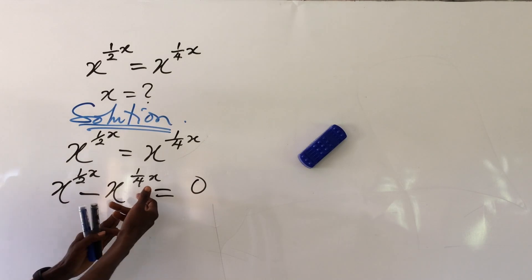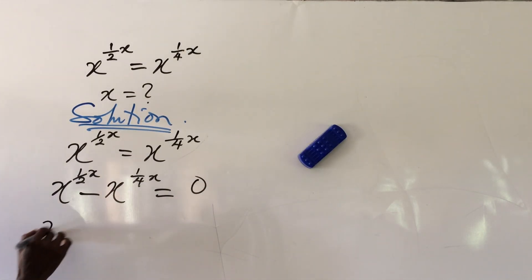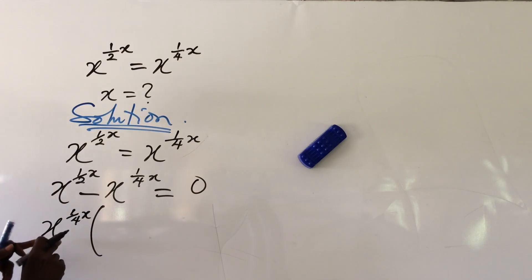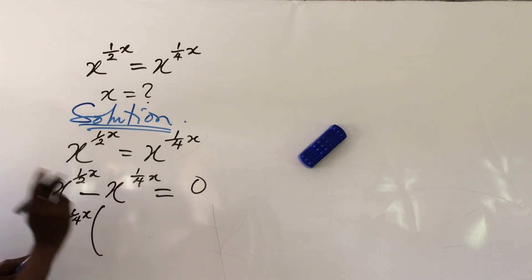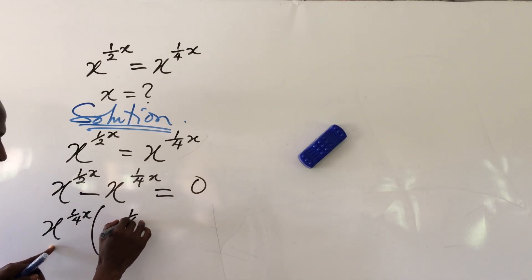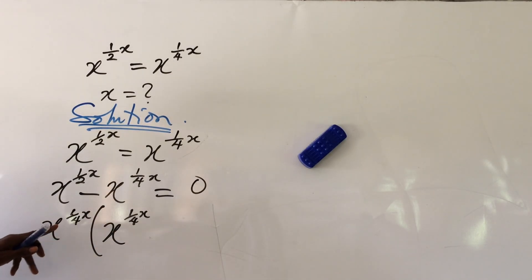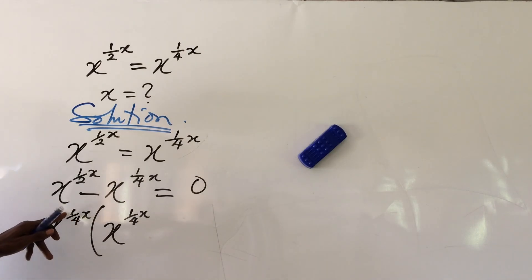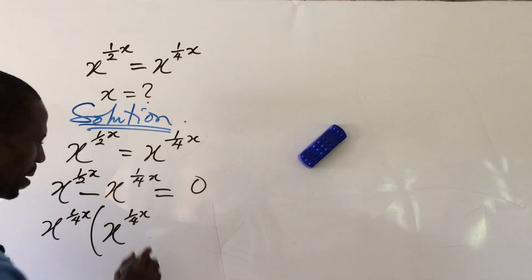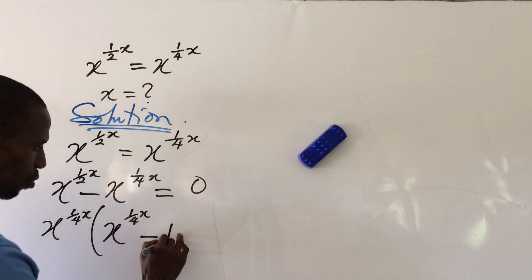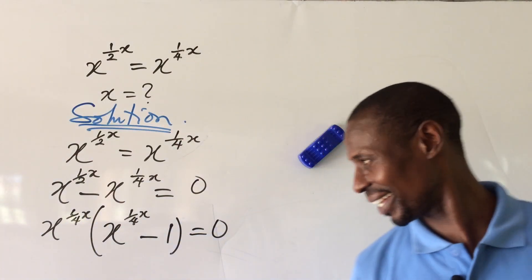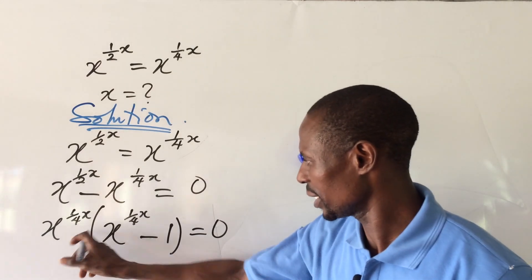We can factor out x, but let's factor out x to the power of one all over four of x. Bringing out x to the power of one all over four of x, if we use this to divide the first term, we are left with x to the power of one all over four of x in the bracket. Because when we open the bracket and multiply, we add the powers since the bases are the same. So inside the bracket we have x to the power of one all over four of x, minus one, close bracket, equal to zero.